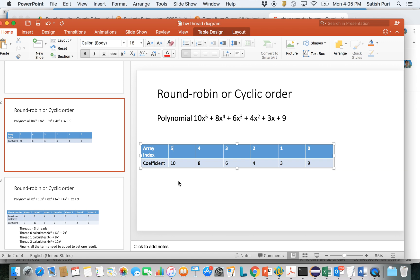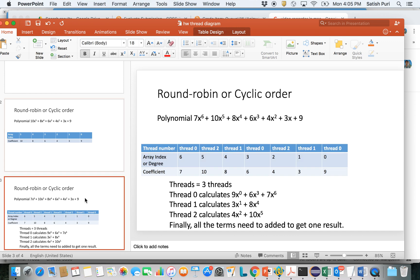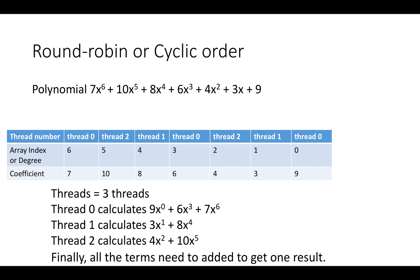Round-robin is one approach. I'll talk about how round-robin assigns work — which is essentially multiplying x by itself degree number of times and then multiplying that with the coefficient value. On this slide, you have the same polynomial, and I'm talking about the round-robin assignment of threads to a term. For example, thread 0 first picks the term at index 0.